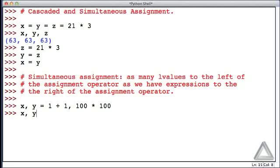Now let's check on the values of x and y. So put them on a line, hit return, and we see that x is 2, which comes from 1 plus 1, and y is 10,000, 100 times 100.